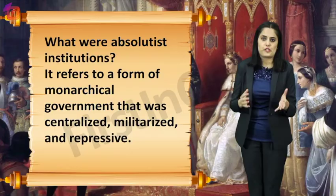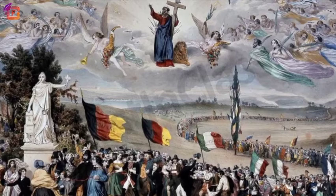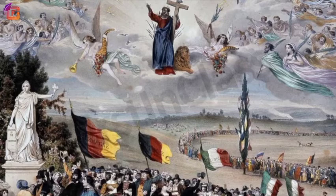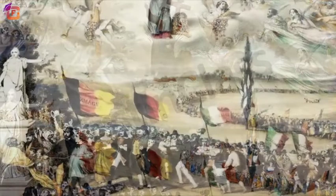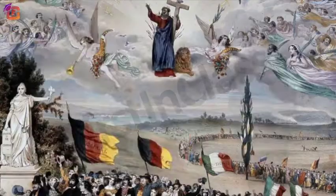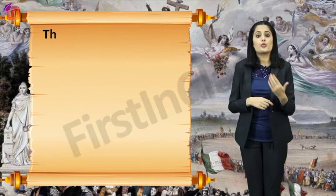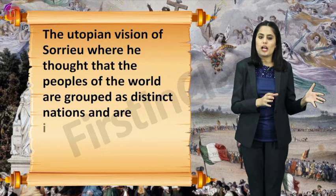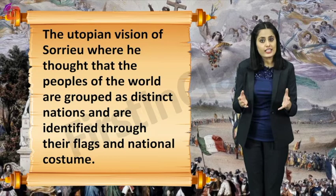On the top in the sky, you can see Christ, saints and angels gazing upon the scene. Sorrio included the gods to showcase a fraternity among the nations of the world. There is also a difference in the people's clothing, reflecting his utopian vision where the peoples of the world are grouped as distinct nations and identified through their flags and national costume.